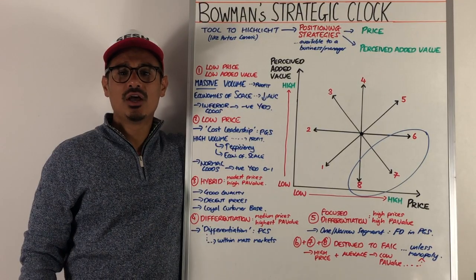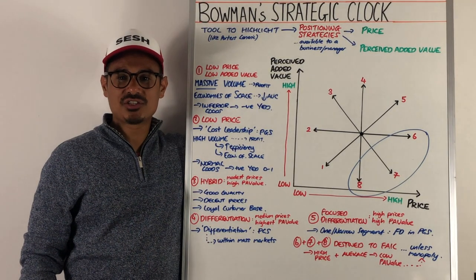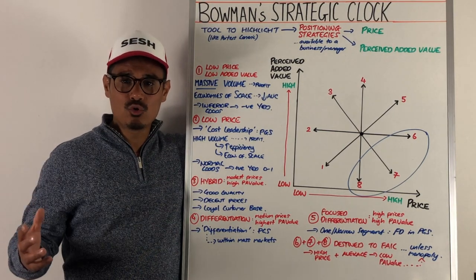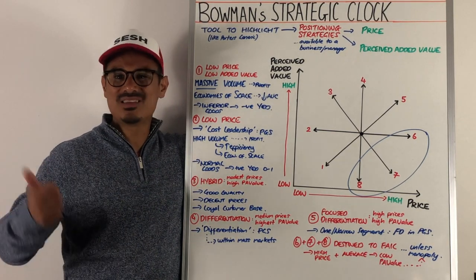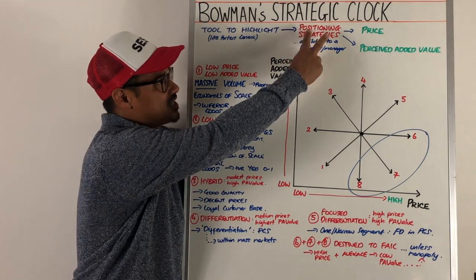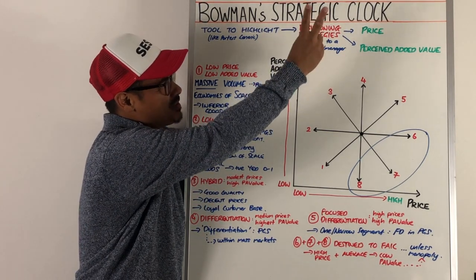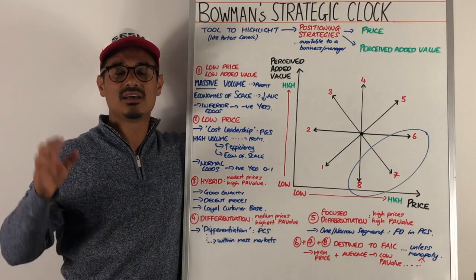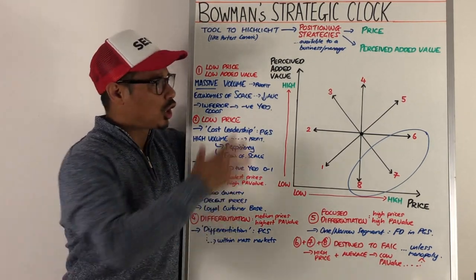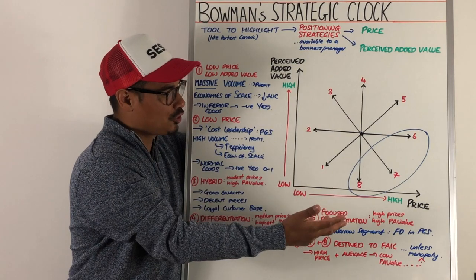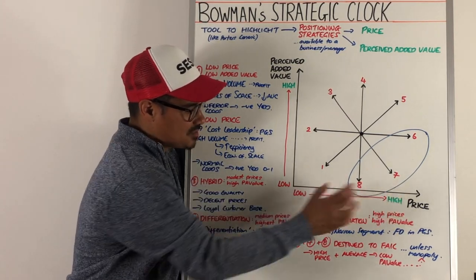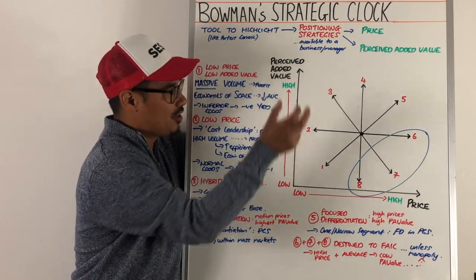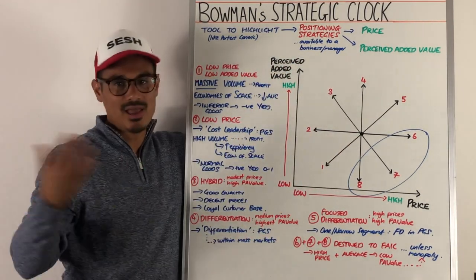Let's have a session on Bowman's Strategic Clock. Much like Porter's generic strategies, this is a tool to show the available options there are to a business or its managers in terms of positioning strategies — specifically positioning strategies in terms of price and perceived added value. It's called a clock because there are eight positions on the clock with respect to price being low or high and perceived added value being low or high.